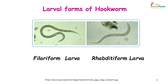The larval forms of the hookworm consist of the newly hatched rhabditiform larva which then matures into the infective filariform larva. The rhabditiform larva is short and stout, whereas the filariform larva is slim and long.